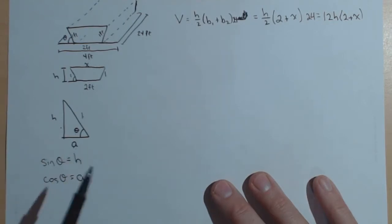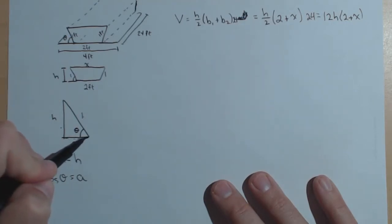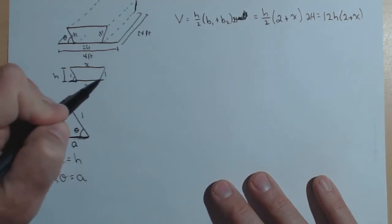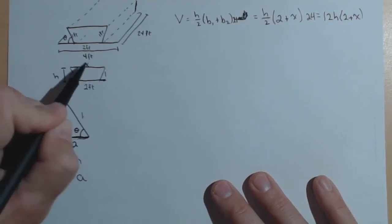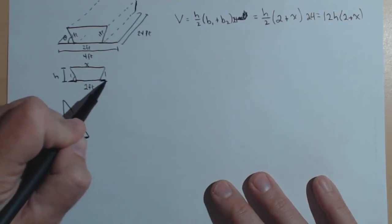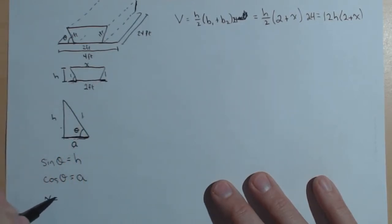We know how h fits into our function. Let's talk about how a does. Notice what a is. A is that piece right here, it's underneath the fold. So this is a, and this is a. So notice that x is the 2 feet plus an a on this side and an a on this side. So x equals 2 plus 2a, or 2 plus 2 cosine of theta, because a is equal to cosine of theta.